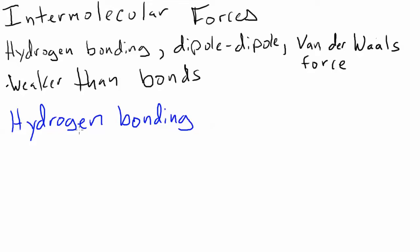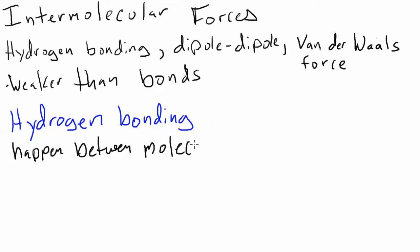So what's hydrogen bonding? Hydrogen bonding happens between highly polar molecules that contain hydrogen and nitrogen, oxygen, or fluorine.